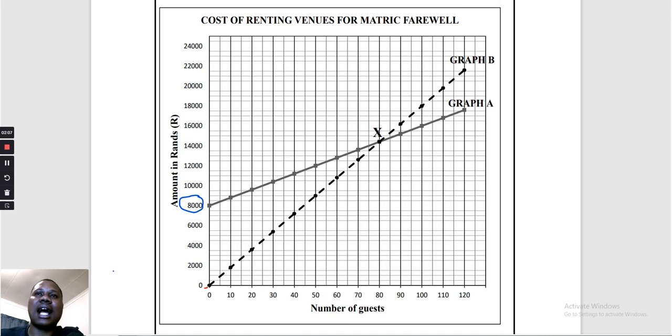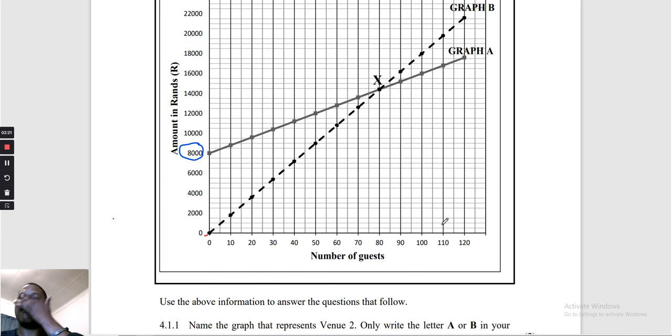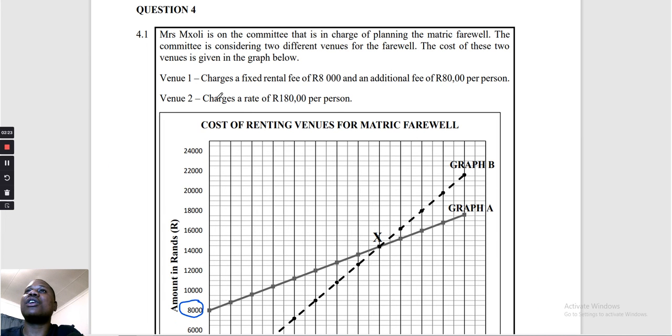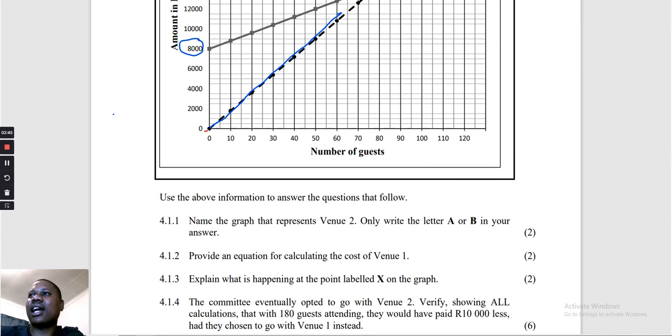Name the graph that represents venue two. Only write the letter A or B. Venue two, let's go and look at how the venue two. They charge 180 per person. So which graph represents it? This line, this graph, this one, because you see it doesn't depend on any other face. If there is no person, you don't pay. If there are 10 people, you pay this. So it's graph number B. Graph B is the correct one.